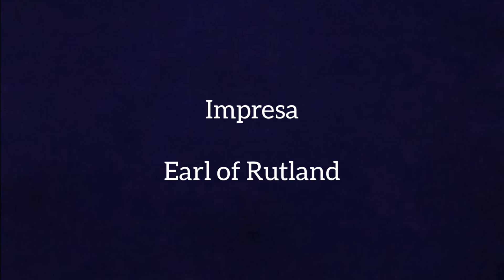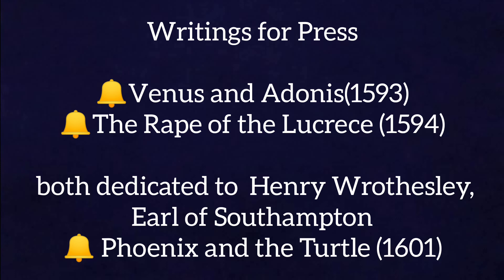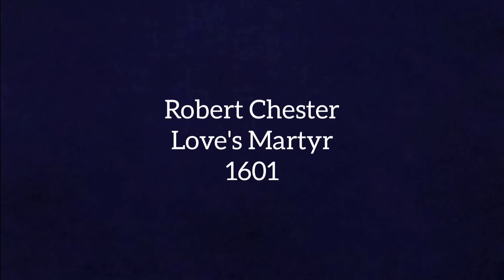This is Shakespeare's last non-literary enterprise. In February 1616, his second daughter Judith married Thomas Quiney. He died, according to the inscription on his monument, on 23 April, and was buried in Holy Trinity. His widow died in 1623 and his last surviving descendant Elizabeth Hall in 1670. Shakespeare's only writings for the press are the narrative poems Venus and Adonis and The Rape of Lucrece, published in 1593 and 1594 respectively, each dedicated to Henry Wriothesley, Earl of Southampton. Then the short poem The Phoenix and the Turtle, published in 1601 in Robert Chester's collection, Love's Martyr.